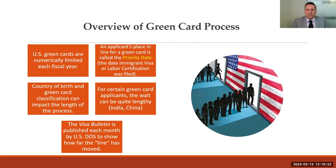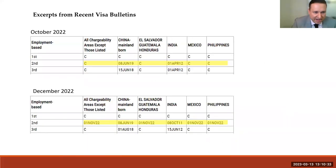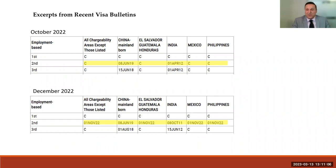Each month the Department of State publishes a visa bulletin, which explains whose place in line is current and what green cards are being processed. 'C' means current — green card numbers are available in that category. For the employment-based second preference, for example, there are many dates listed, meaning those places in line are not yet ready to be issued. It's not uncommon for someone from India or China to have a very lengthy wait. The fastest way to get a green card, if you happen to have the love of your life who is a U.S. citizen, is the marriage-based process.